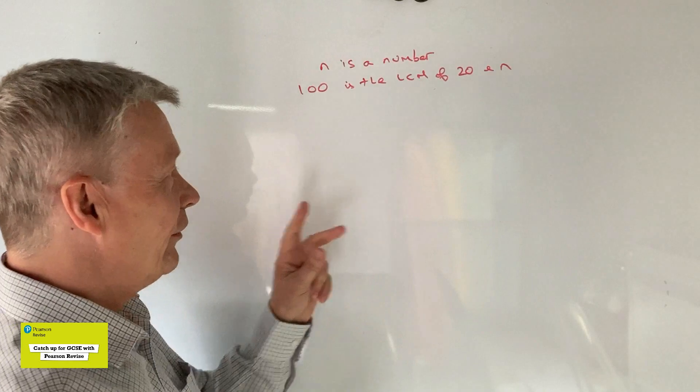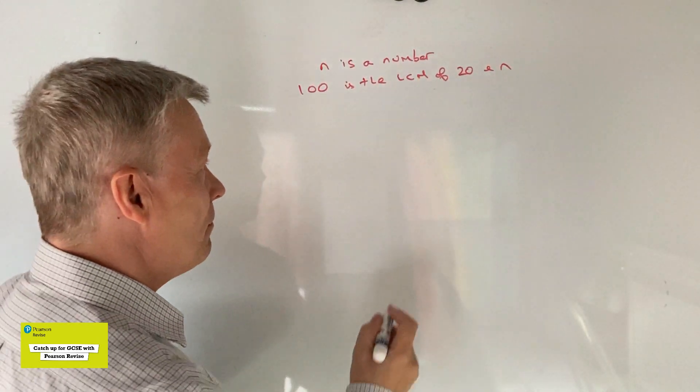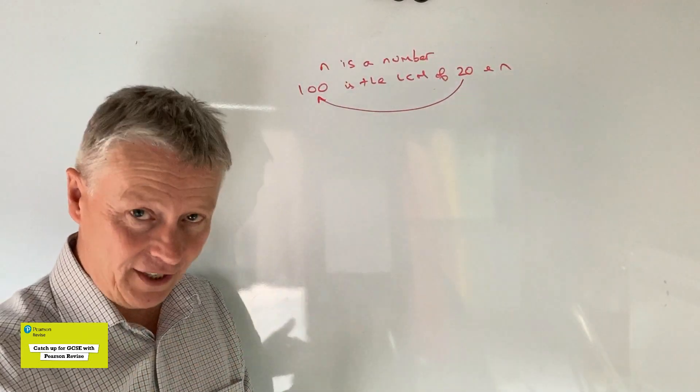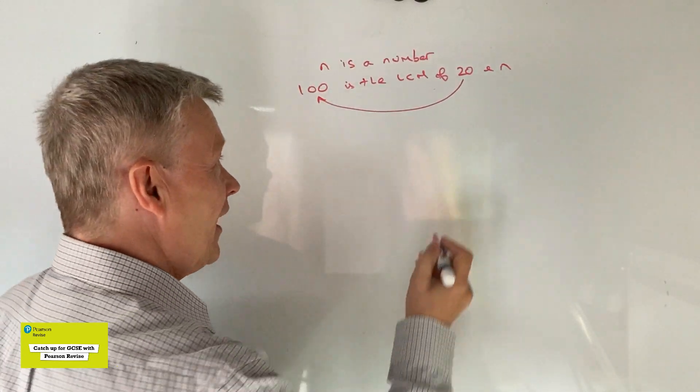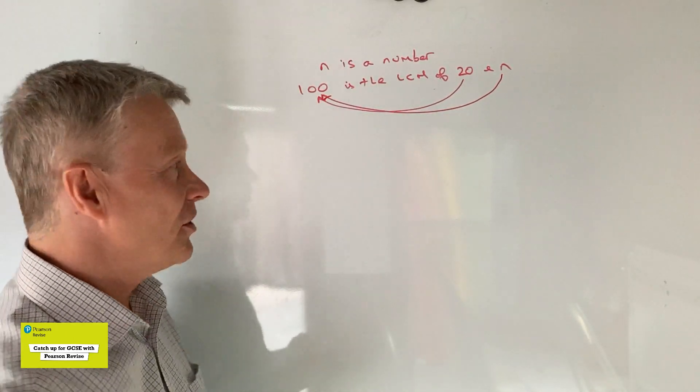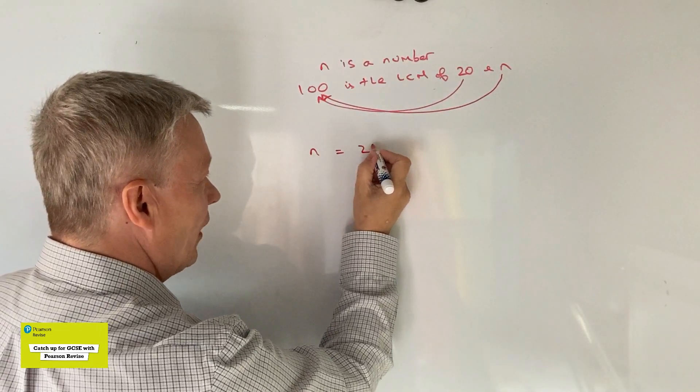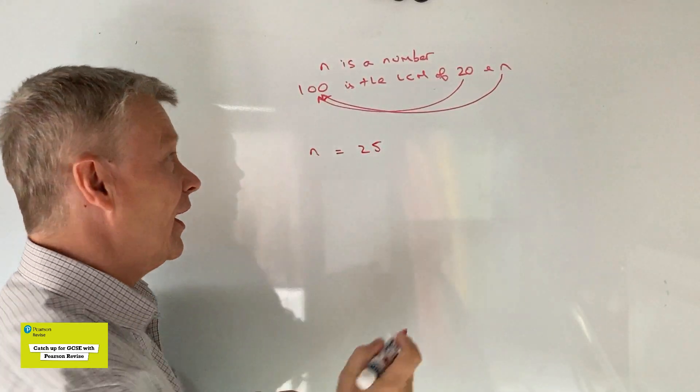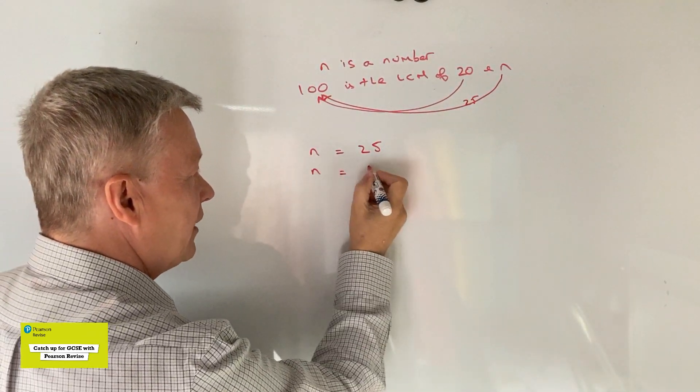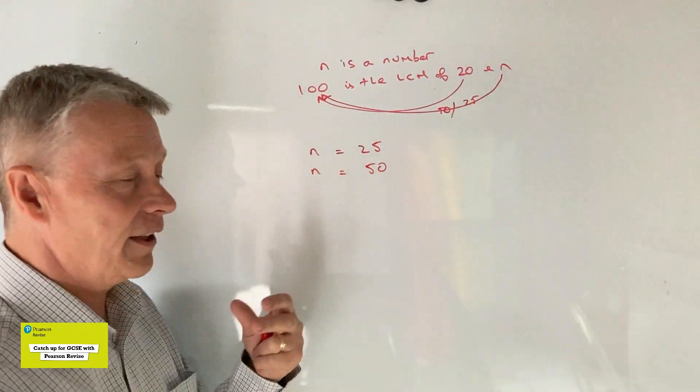All right, so one of the things that I guess you need to really appreciate with LCM is that 20 must be a factor of 100. It must divide into 100. So therefore it follows that N must also need to divide into 100. So there's two values of N that we could use. N could be equal to 25 because 25 will divide into 100, absolutely no problems at all. Or N could be equal to 50 because also 50 could divide in, no problems at all.